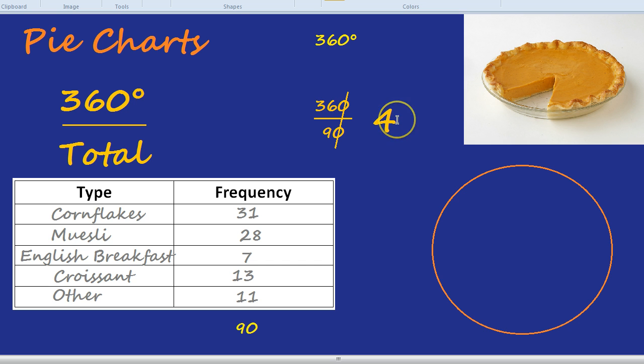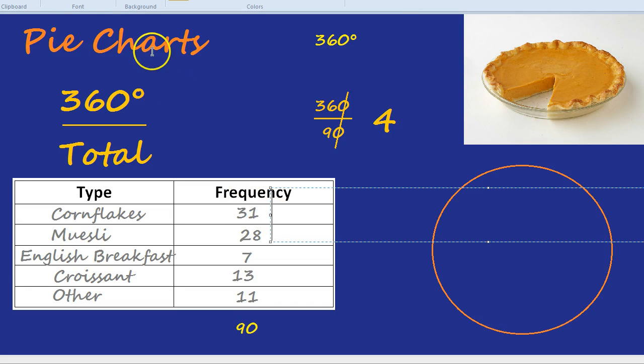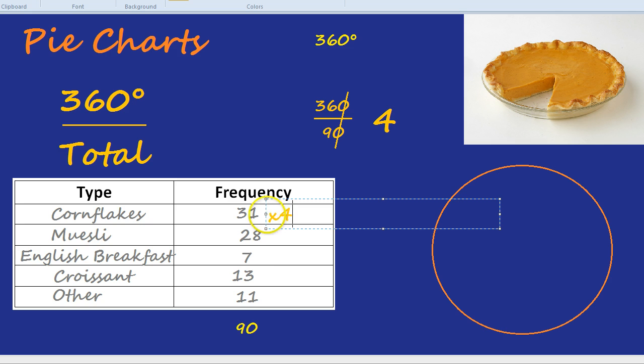What do we do with that 4? How does that help? Well, that shows you how much you need to stretch each number to fit into that whole circle. So what we do for each of these numbers, to find the angle that they're going to be on the pie chart, is times by 4.